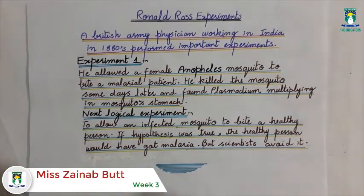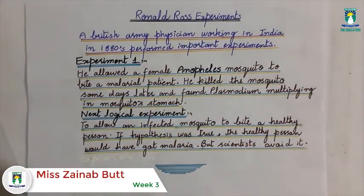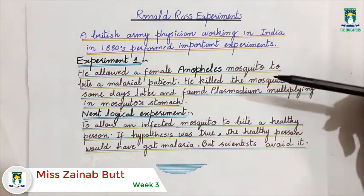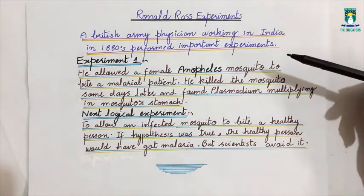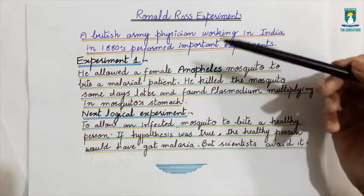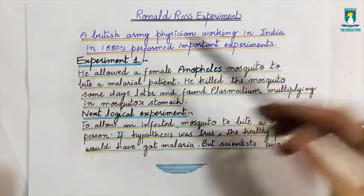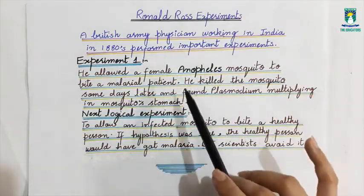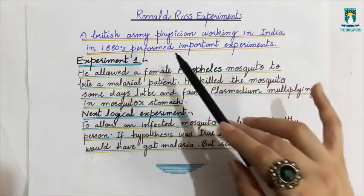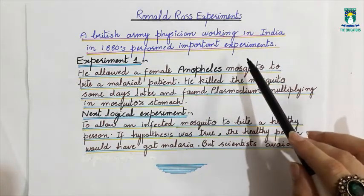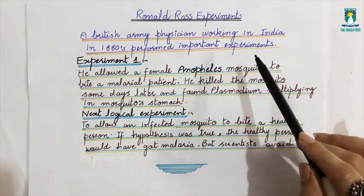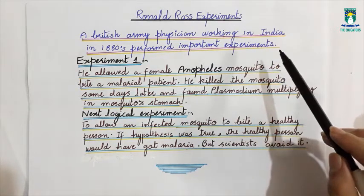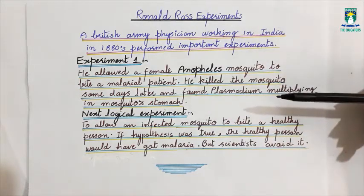Okay students, now we will discuss the experiments of Ronald Ross. Previously we discussed Alfakin's observations, then his hypothesis, then the deductions. Now, in order to test the above deductions, Ronald Ross, a British army physician working in India in the 1880s, performed important experiments. He used rigorous testing to check whether the hypothesis was correct or incorrect.